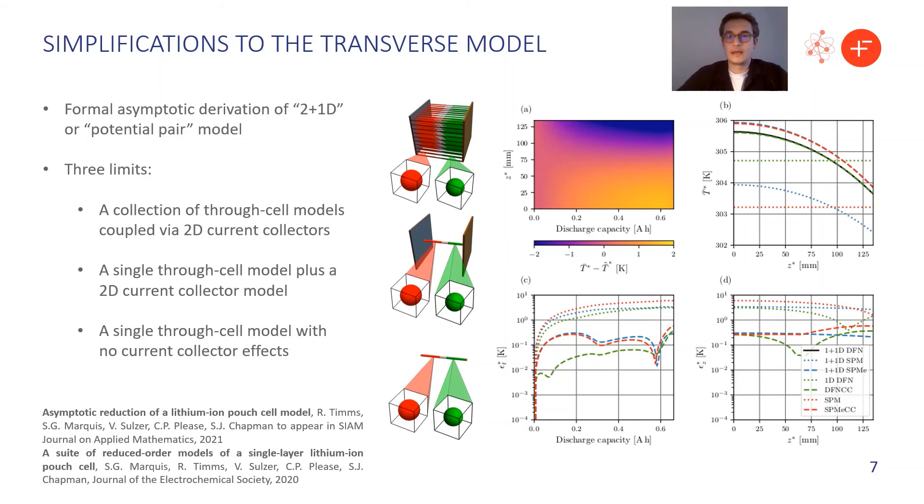And in these papers shown here on the bottom left, we explore the various limits in which each of these models is appropriate, and try and quantify the errors you make when going from one model to the next. Now clearly some of these models are much more computationally expensive than the others. In the top model, shown in the middle images there, you're solving a large number of potentially complicated electrochemical models. If you've got a large pouch cell, you might need a lot of these. So maybe you're operating in a regime where you actually only solve one or a couple of these models.